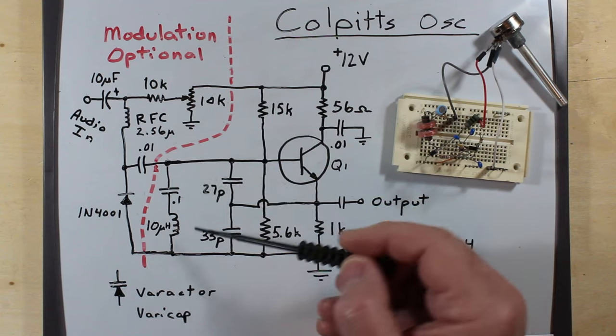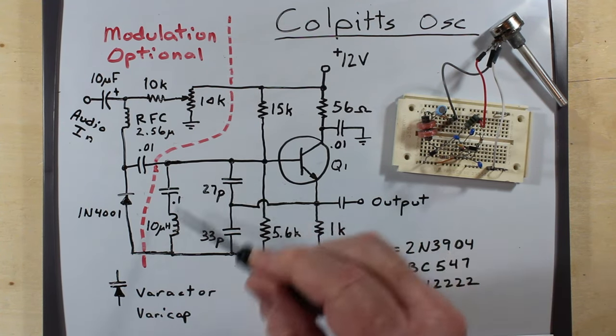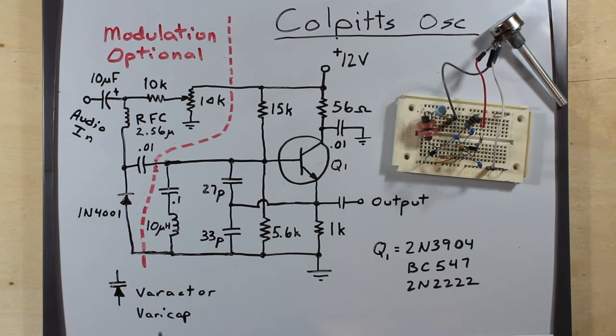AC wise at the 9.2 kilohertz, this is a short. So that gives us our circulating tank circuit right here.